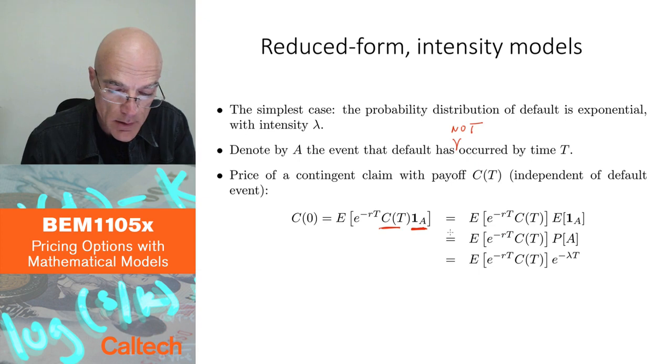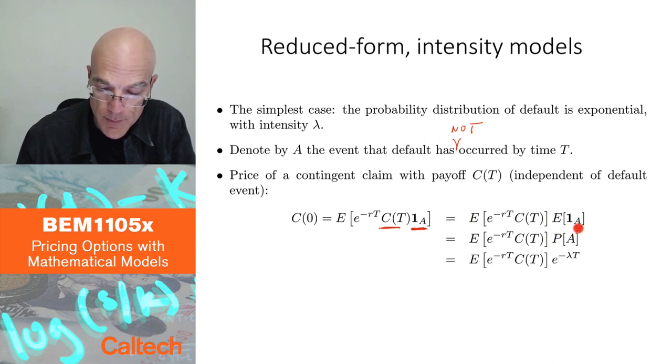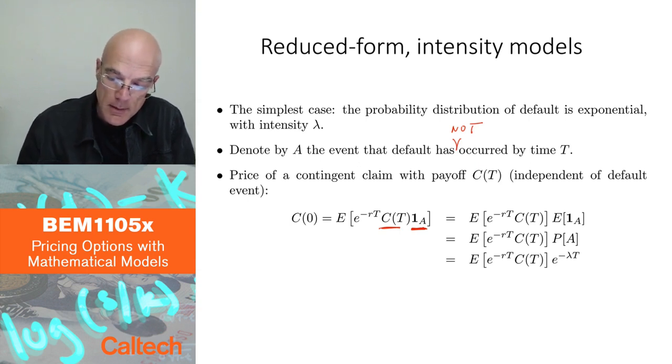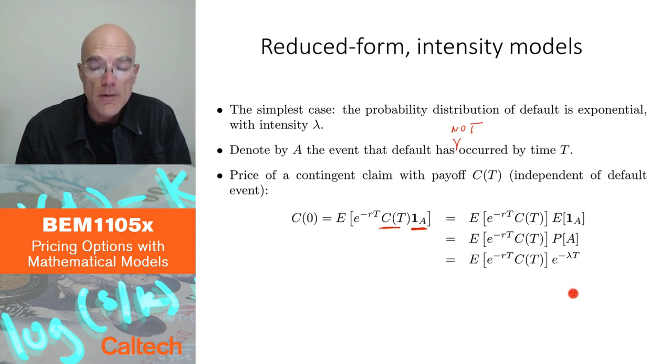Well, because I assume independence, then expected value of the product is the product of expected values. So I can write it as an expected value of this, which is our usual formula for price, times expected value of the indicator function. But we've already used the fact that the expected value of the indicator function is just the probability. So this is probability of no default. And that, in the exponential distribution, probability of the event not happening, the exponential time not yet arriving, is e to the minus lambda T. So higher lambda, smaller probability that default has not happened. So that's our formula.